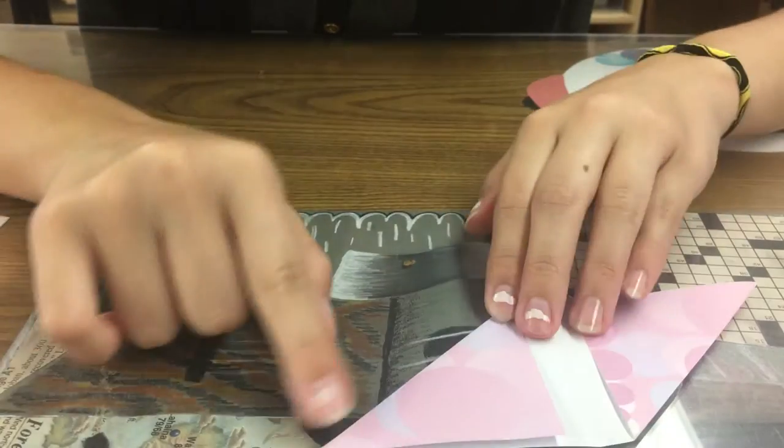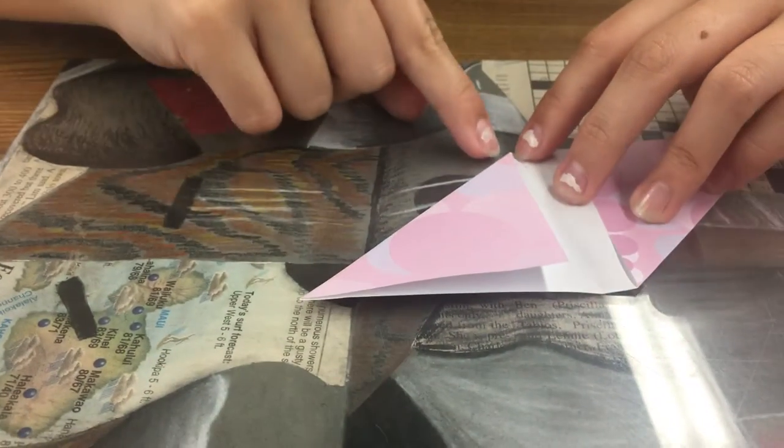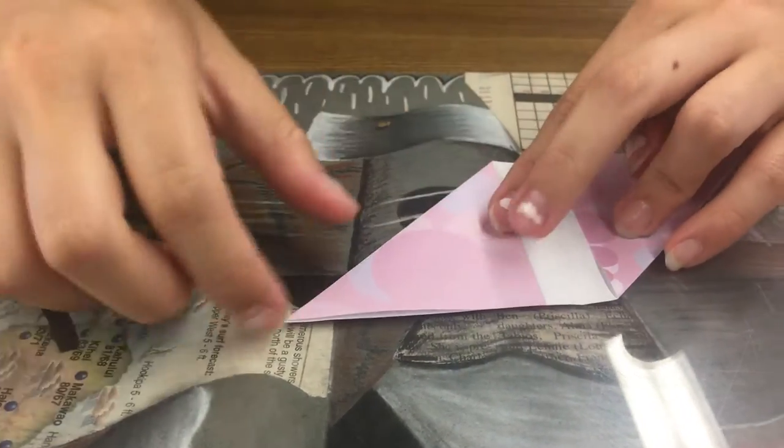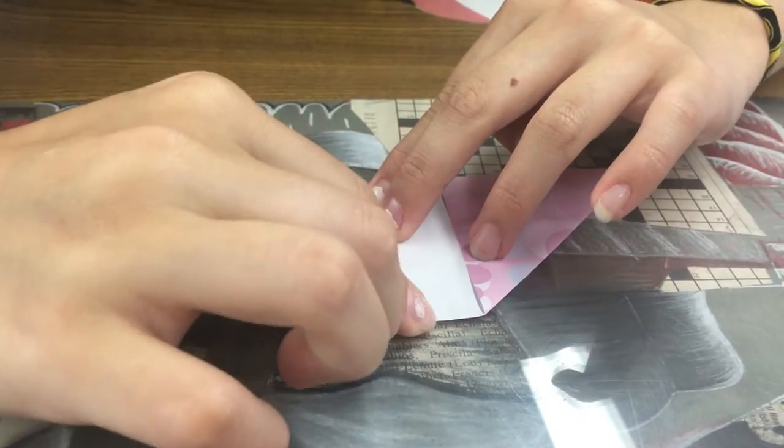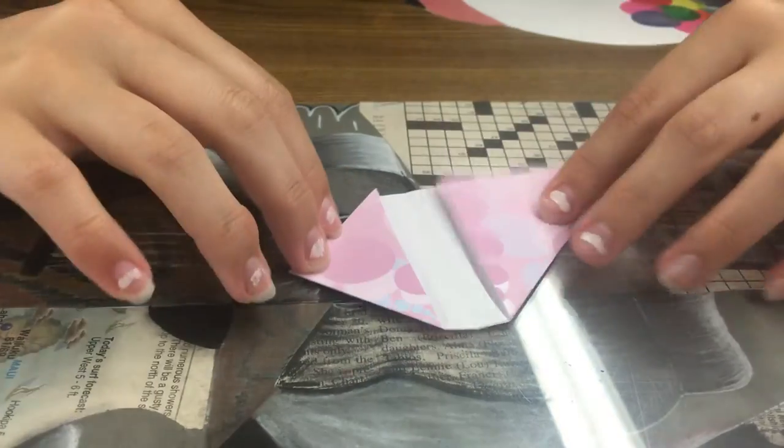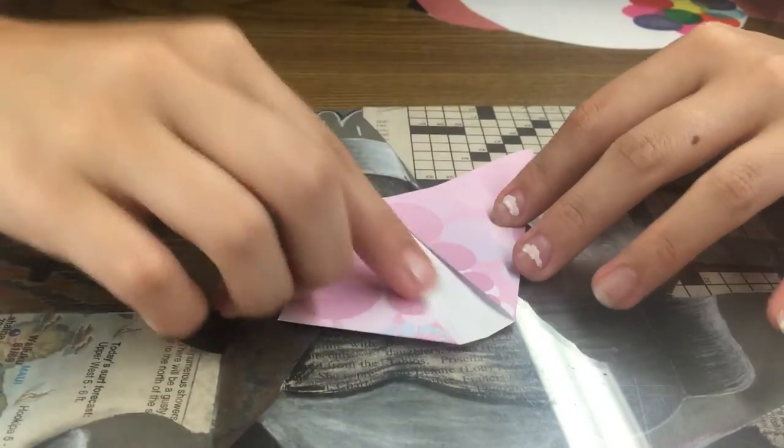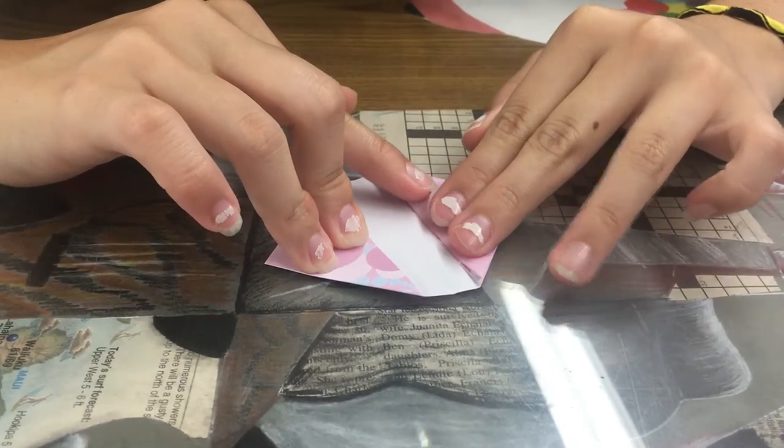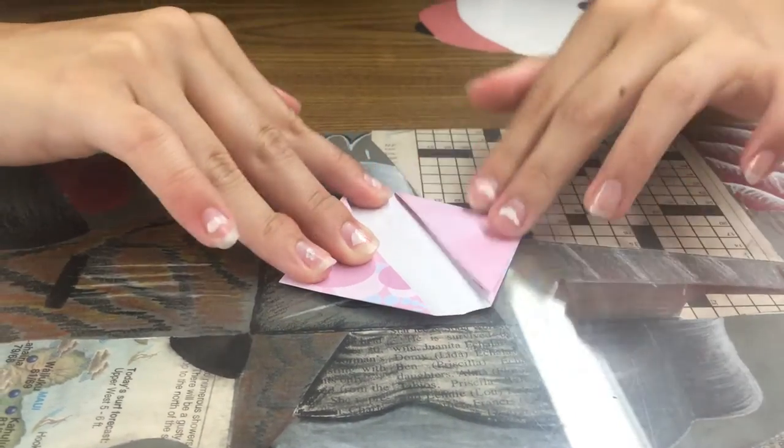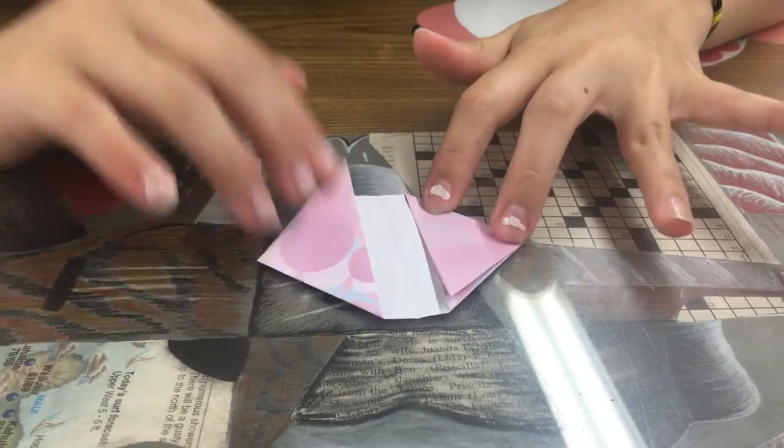Next you're going to take this corner and fold it to this corner over here just like that, and you're going to repeat for the other side too. So we're taking this corner, meet it to that corner, and we're going to repeat this...